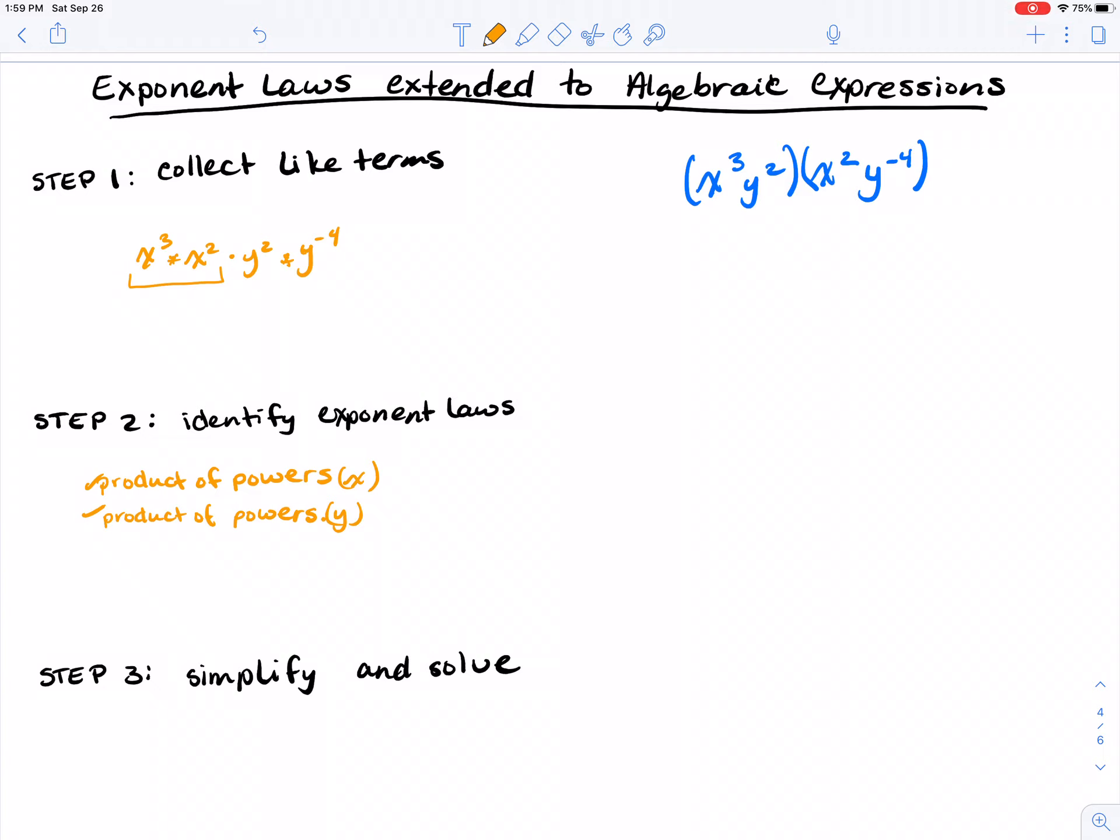I'm going to go ahead now and apply the exponent laws. So I have x cubed plus 2 times y squared plus negative 4. Now I can go ahead and simplify and solve.